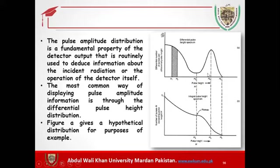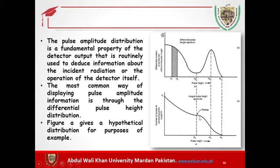Here you can see the area under the curve, which means the number of counts. Where the number of counts is lower, this is known as the valley — the region where the slope is lower. Where the slope is high, it is going up, and where it is going down, there is a peak followed by a descent.